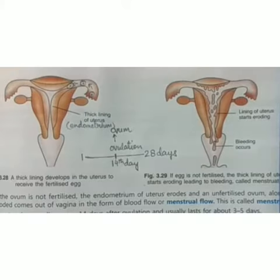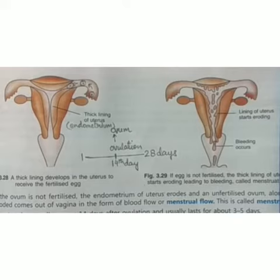This eroded inner lining of the uterus, along with the blood, mucus, and the dead and disintegrated ovum or egg, comes out of the vagina of the female in the form of a bleeding called menstruation.